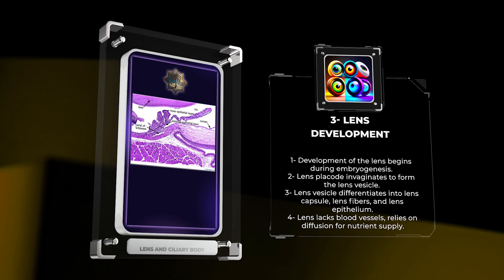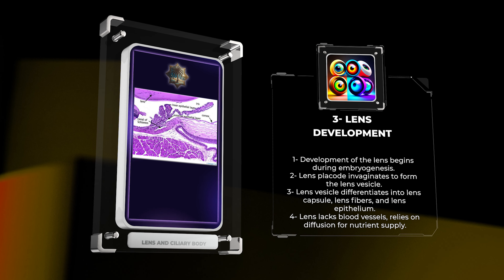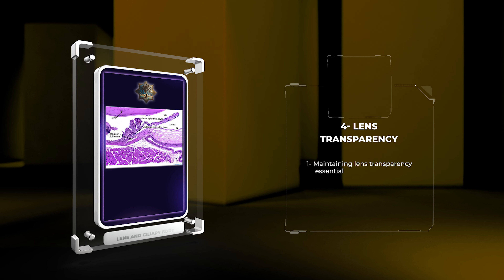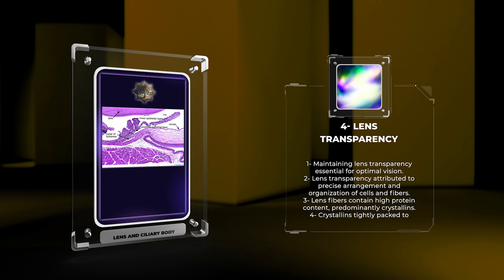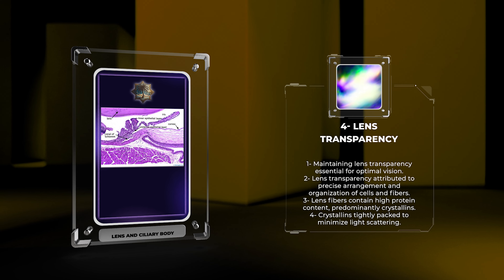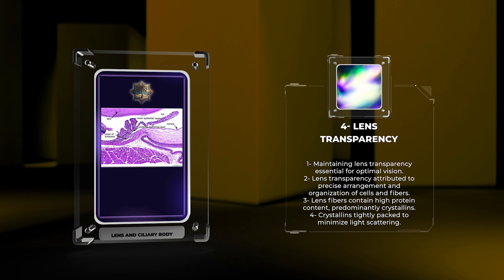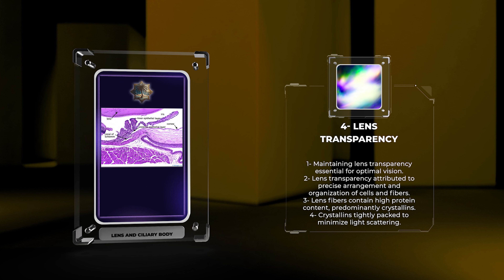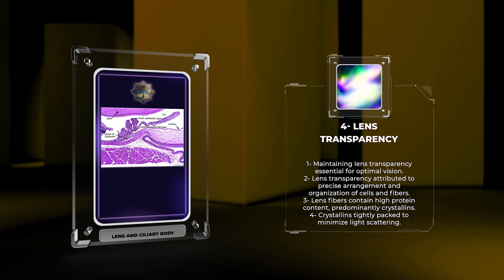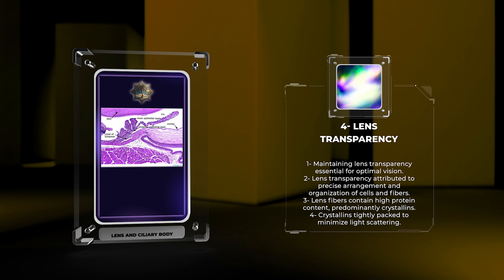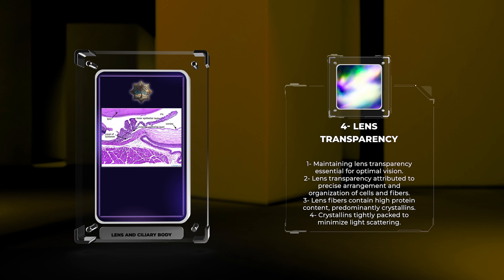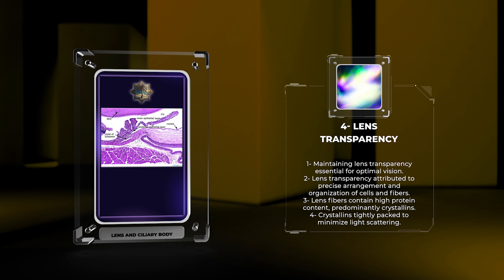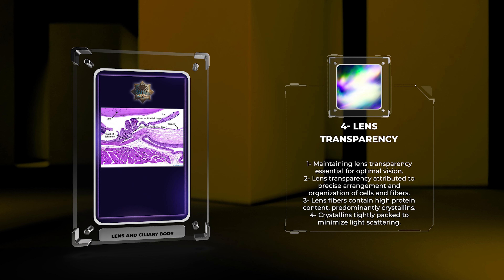The lens and ciliary body are essential components of the eye, playing crucial roles in vision and accommodation. The lens is a transparent, biconvex structure located behind the iris and consists of elastic fibers called lens fibers. It serves to focus light onto the retina for clear and sharp vision. The ciliary body is a ring-shaped structure located anterior to the lens, composed of ciliary muscle and ciliary processes. It is responsible for adjusting the shape of the lens to allow for near and far vision, a process known as accommodation.